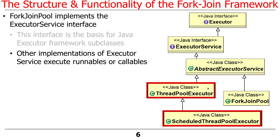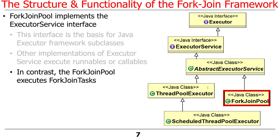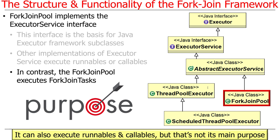Other implementations of ExecutorService are used to execute Runnables and Callables. A functional interface has a single abstract method — Runnable and Callable are examples, with run or call as their single method. The ForkJoinPool, in contrast, is used to execute something called fork join tasks. It is possible to also implement Runnables and Callables to run them with a fork join pool, but it's kind of pointless. You'd probably want to use ThreadPoolExecutor or something else to run those.